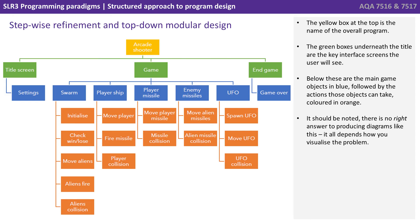The yellow box at the top is the name of the overall program. The green boxes underneath the title are the key interface screens the user will see. Below these are the main game objects in blue, followed by the actions those objects can take coloured in orange. There is no right answer to producing diagrams like this — it all depends on how you visualise the problem.